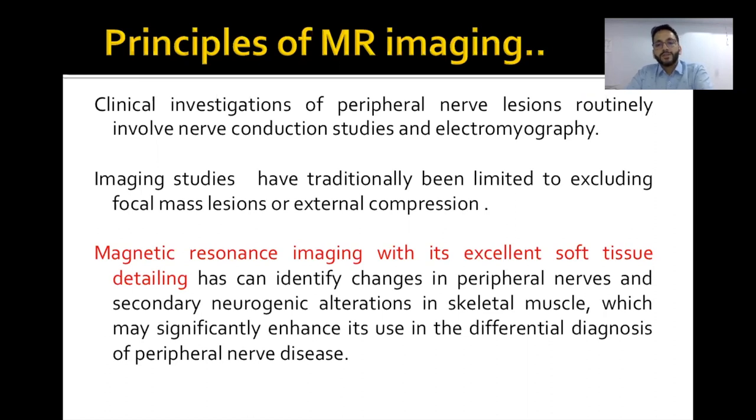MRI because of its excellent soft tissue imaging can identify structural changes in the nerves as well as the secondary neurogenic fluctuations which occur in denervated muscles. This greatly enhances its use in differential diagnosis of peripheral nerve disease.